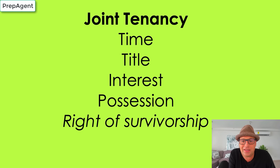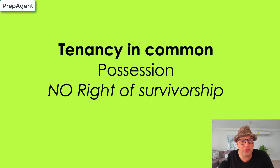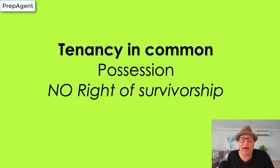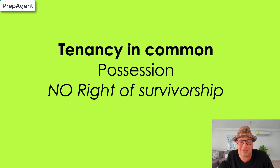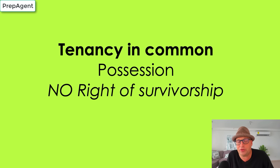As opposed to tenancy in common, where there's only unity of possession but no right of survivorship. So if I die, I could will it to my heirs because you don't have the right of survivorship. That's the difference between joint tenancy and tenancy in common — those are types of concurrent estates, as opposed to owning a property in severalty.